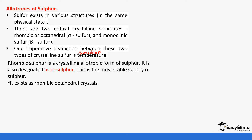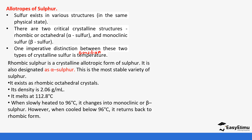Rhombic sulfur exists as octahedral crystals and has a density of around 2.06 g/mL. Its melting point is 112.8 degrees Celsius. When slowly heated to 96 degrees Celsius it changes to monoclinic or beta sulfur; however, when cooled below 96°C it converts back to rhombic form. So 96°C is the transitional temperature — above it is monoclinic, below it is rhombic.